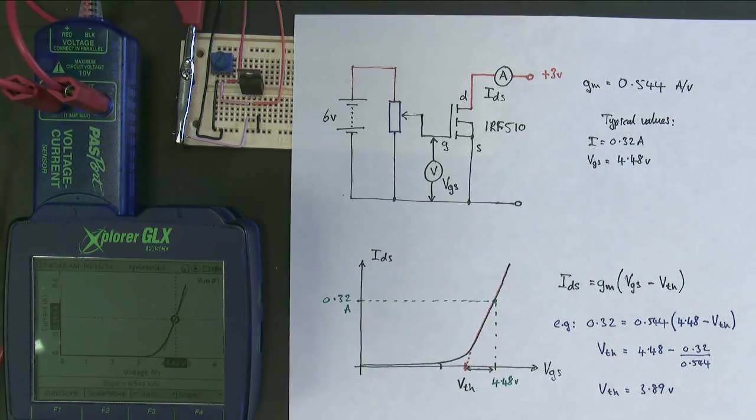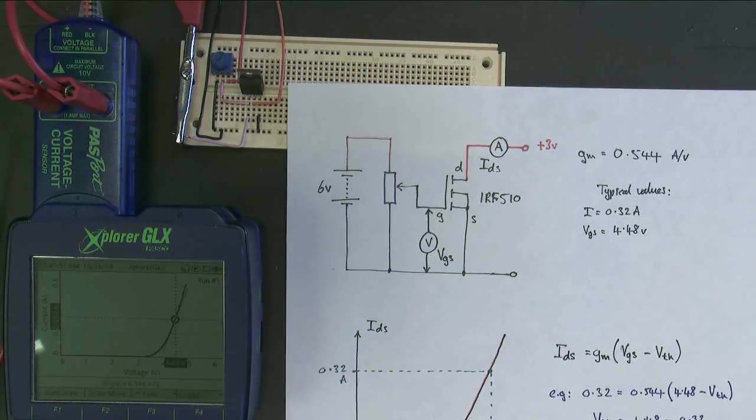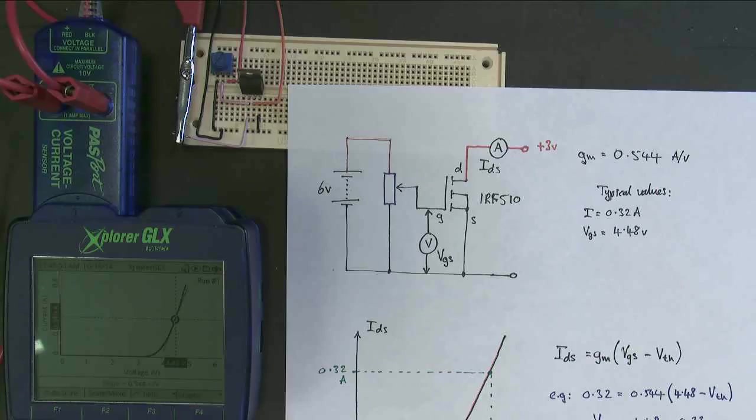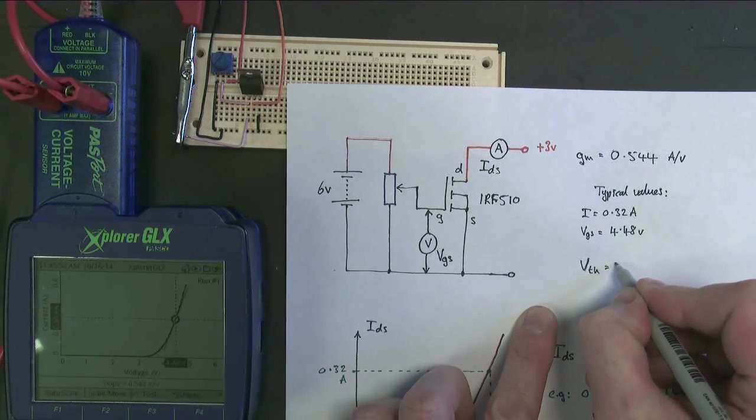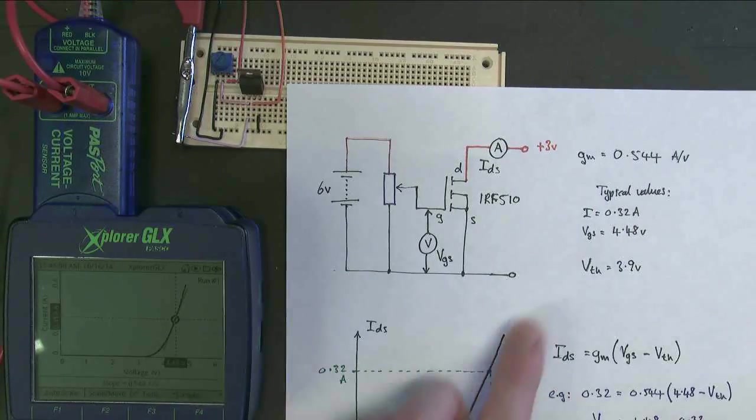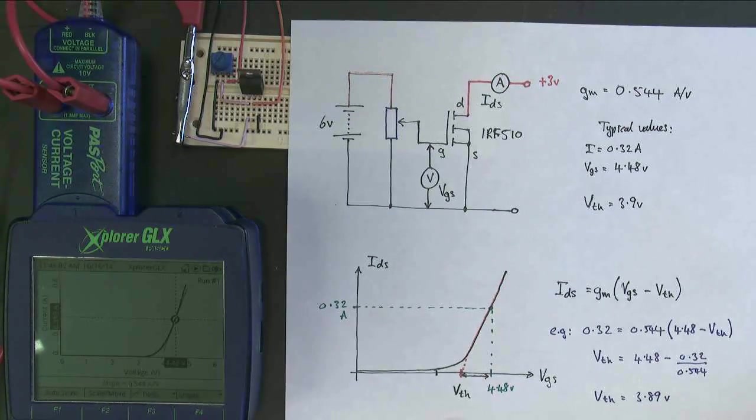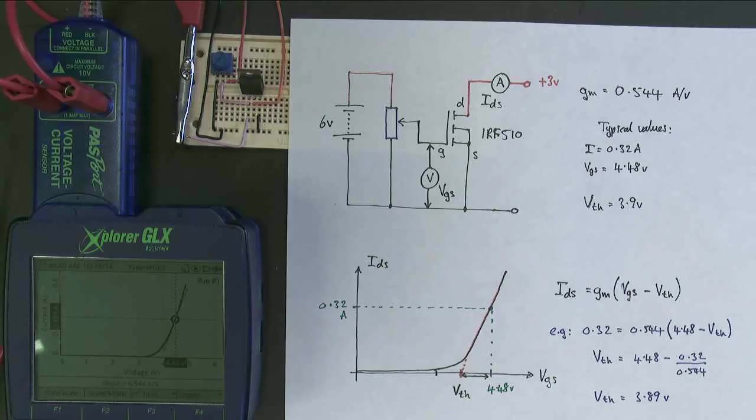So what we can say now for our MOSFET, and we've investigated it, we've measured it, we can say that the threshold voltage is approximately 3.9 volts. And that's the first part of what we're going to do. We're going to need to actually switch circuits now and look at the second characteristics in just a moment.